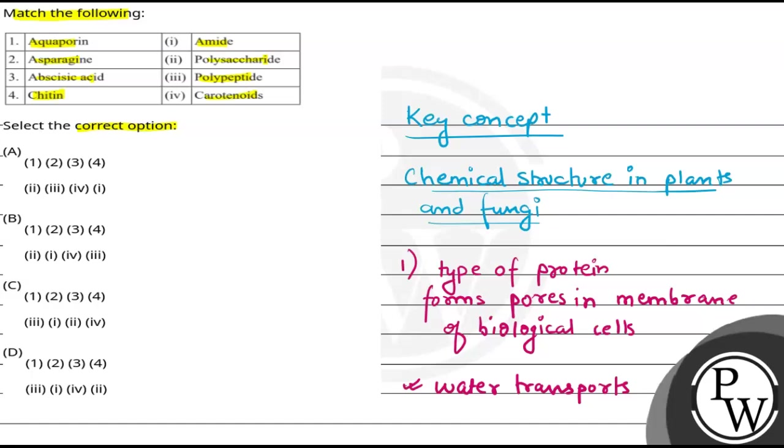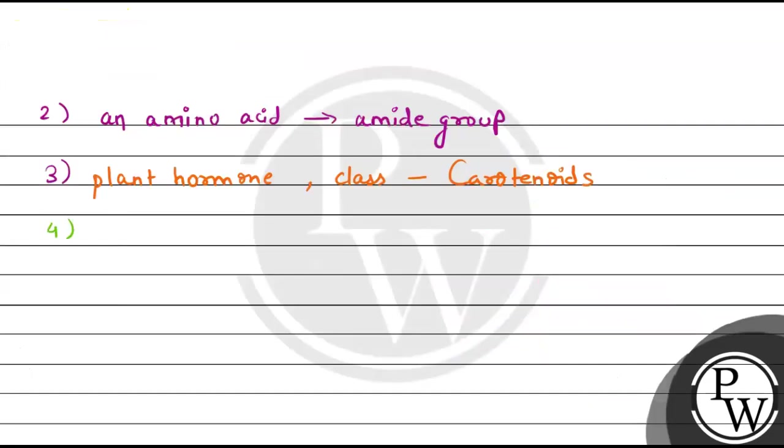And lastly, we will talk about chitin. Chitin is a long chain polymer of N-acetyl glucosamine, which is a derivative of glucose.